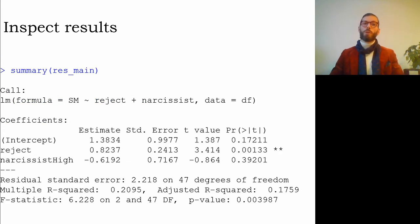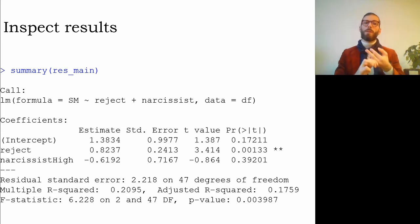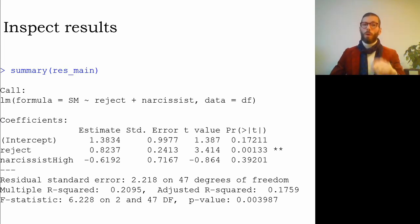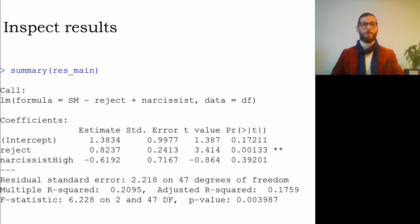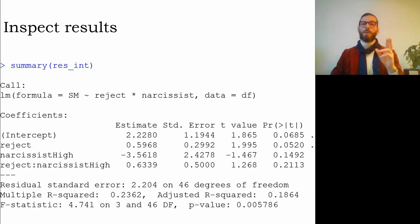Looking at the results of the main effects model: I get an intercept, a slope for rejection, and a slope for the dummy coding high narcissism. The intercept represents the predicted value for low narcissists who score zero on rejection. I have not centered these predictors, so zero falls outside the range of observed values for rejection. The model has an R-squared of about 0.21 and is significant with a p-value of 0.004.